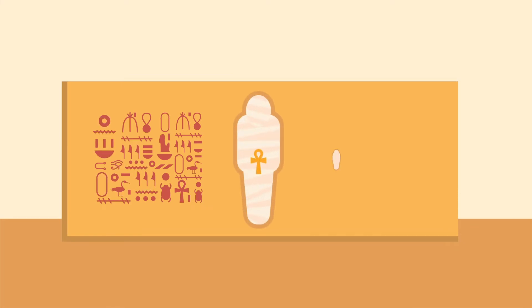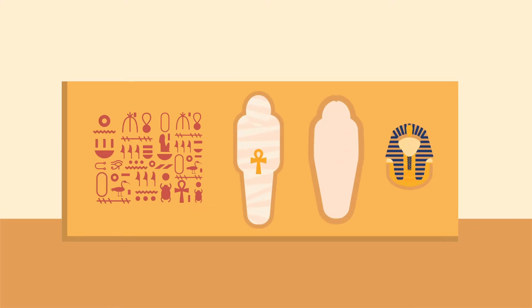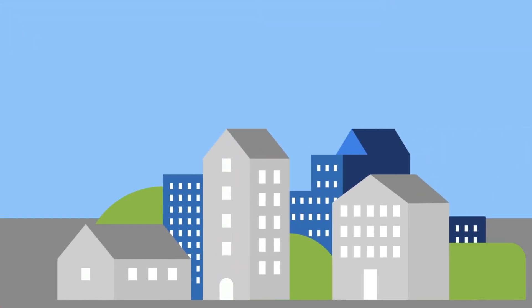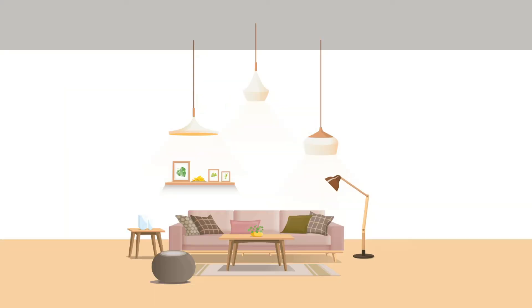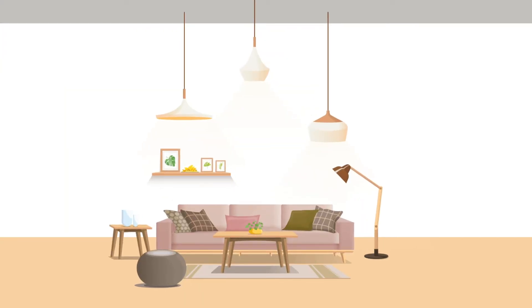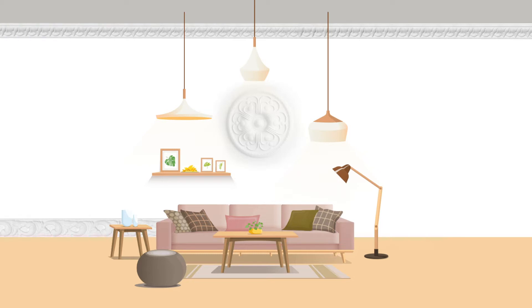Gypsum plasters and mortars were known already in ancient Egypt, where they were used to line walls, to prepare surfaces for paintings, or to encase mummies, make moulds and funerary masks. From ancient Egypt to the present day, gypsum has also been appreciated in construction to make relief decorations for walls, ceilings and floors.